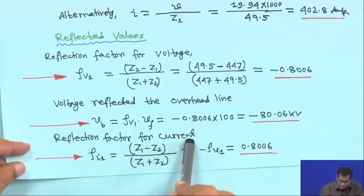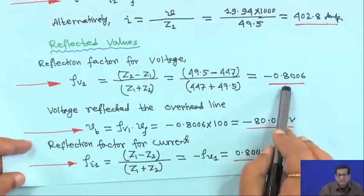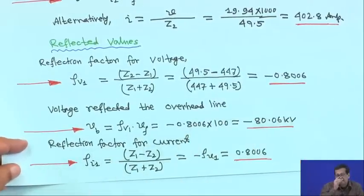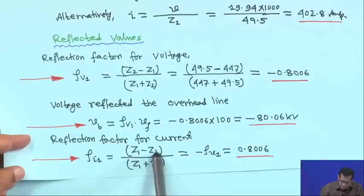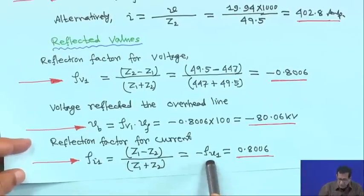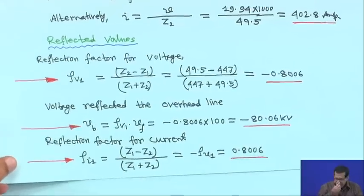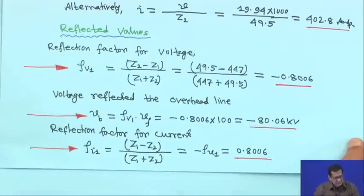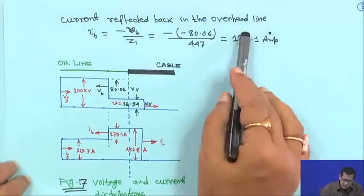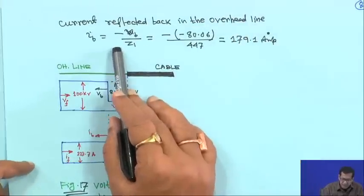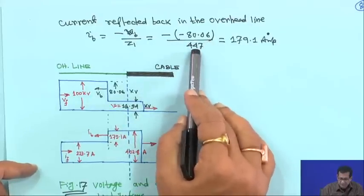The reflection factor for current is the negative of rho_V1, so it equals 0.8006. The reflected current in the overhead line, Ib, equals −Vb upon Z1, which is −(−80.06 kV) divided by 447 ohms, giving 179.1 amperes.